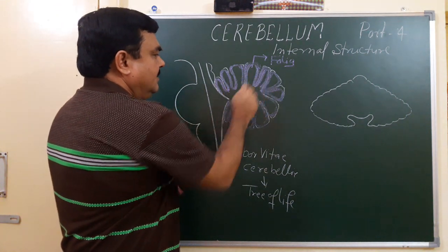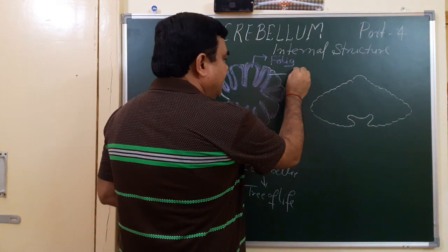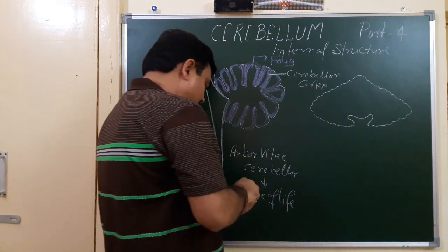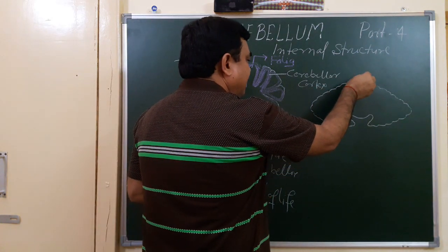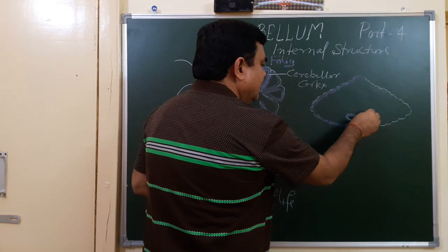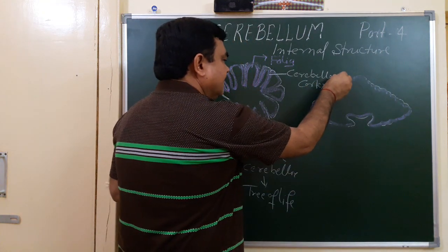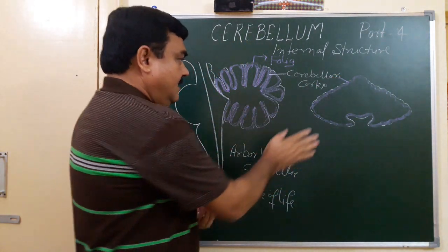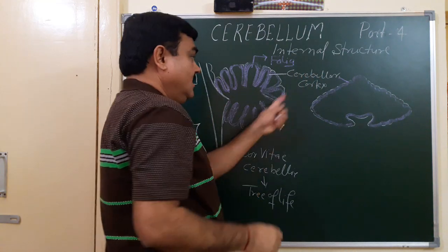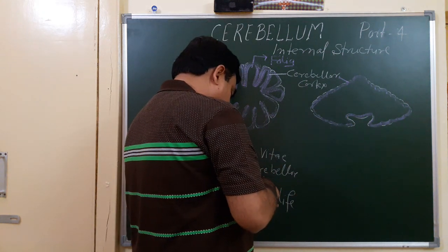If you see from superficial to deep: the superficial part is the cerebellar cortex, which is made up of gray matter. This thin peripheral layer is gray matter. And the deeper part is white matter. So it has gray matter on the outside and white matter inside, with gray matter also present from the nuclei.